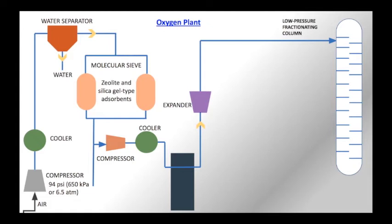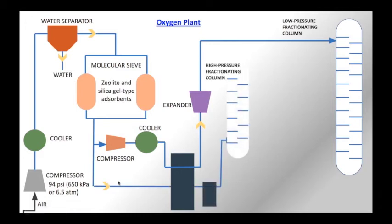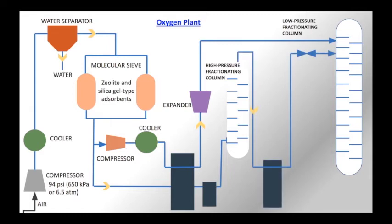The liquefied oxygen is fed to a low-pressure fractionating column. One portion of the air stream is fed through the compressor, expanded, and then fed to the low-pressure fractionating column. A second split of the air stream passes through an exchanger and is fed to a high-pressure fractionating column.